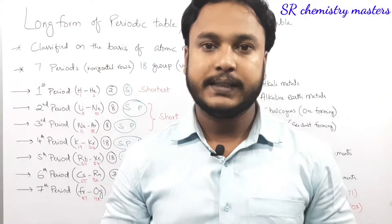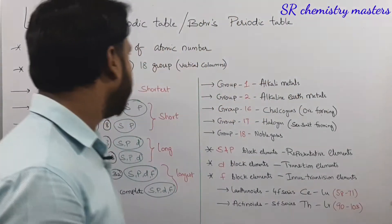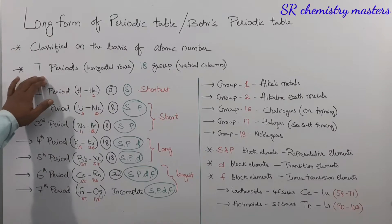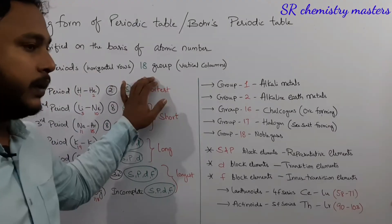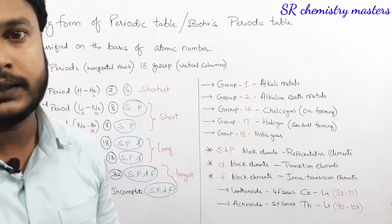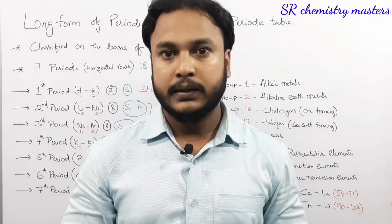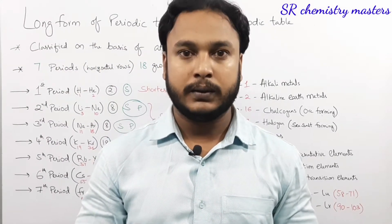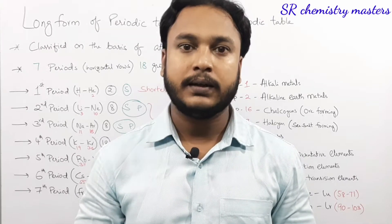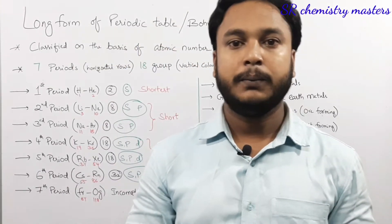The long form of periodic table consists of seven periods and 18 groups. The horizontal rows present in the periodic table are considered as periods, whereas the vertical columns present in the periodic table are considered as groups. There are 18 groups and seven periods in the periodic table.